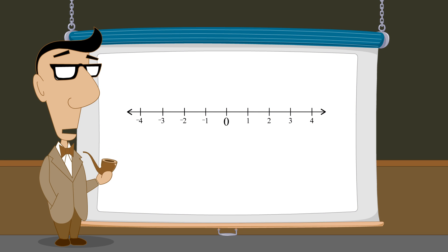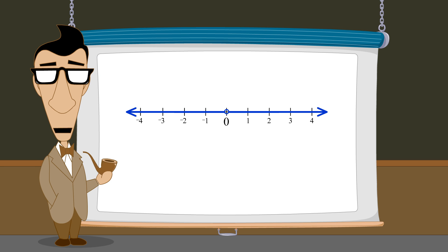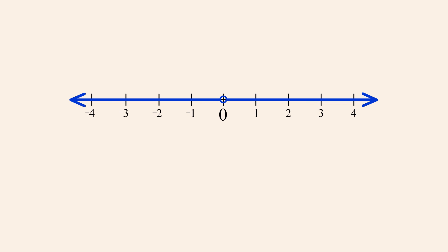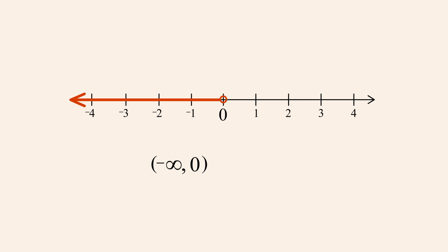As a final example, let's create a set containing all real numbers except zero. In set builder notation, this is the set containing all numbers x not equal to zero. This set is not an interval, since if we pick any two numbers on either side of zero, both numbers are members of the set, but the number zero which lies between these two numbers is not a member of the set. We can represent this set using interval notation by taking the union of the left unbounded interval containing all numbers less than zero and the right unbounded interval containing all numbers greater than zero.